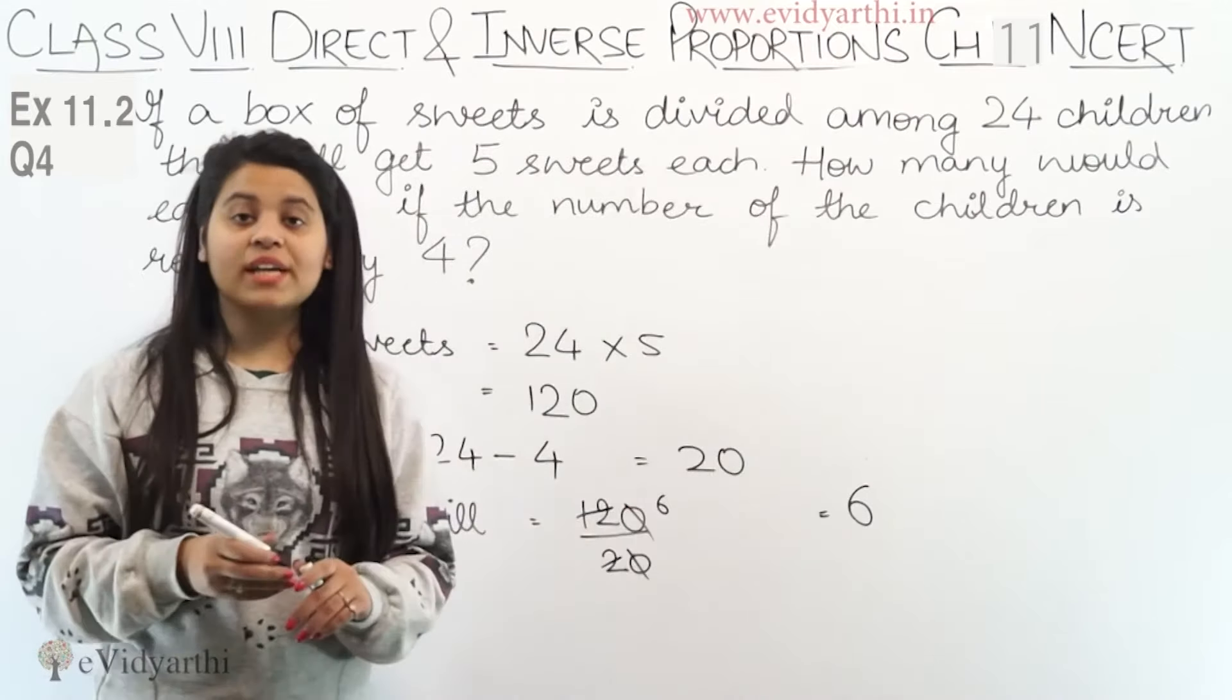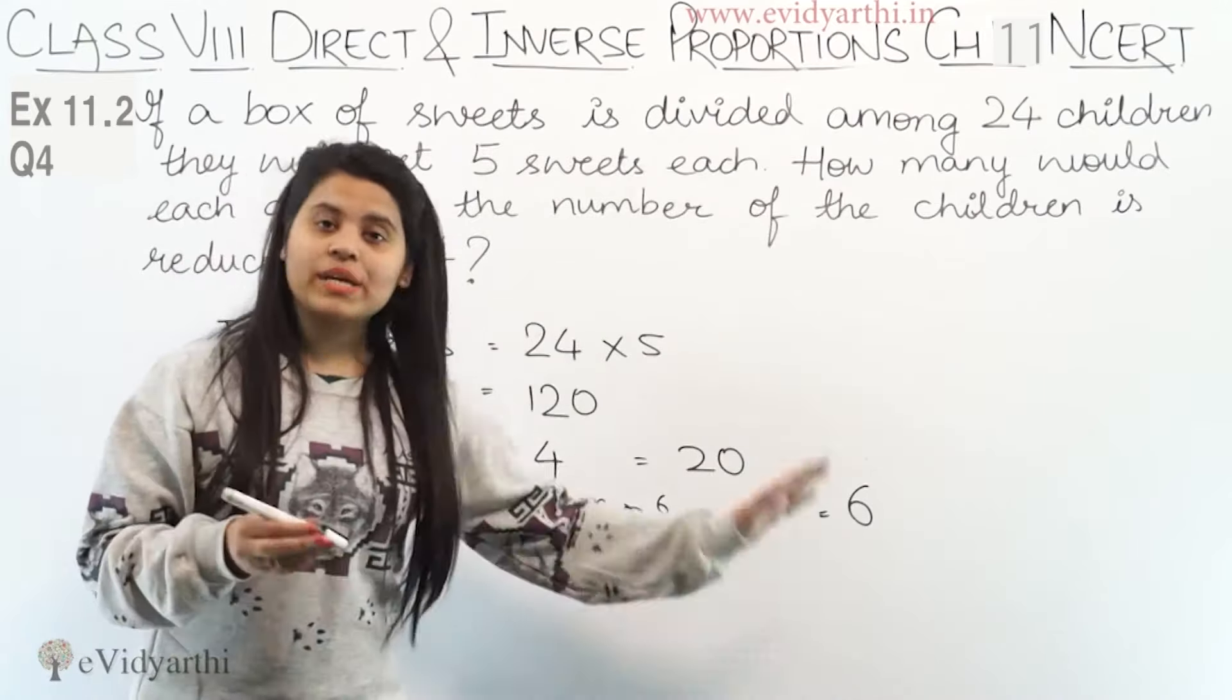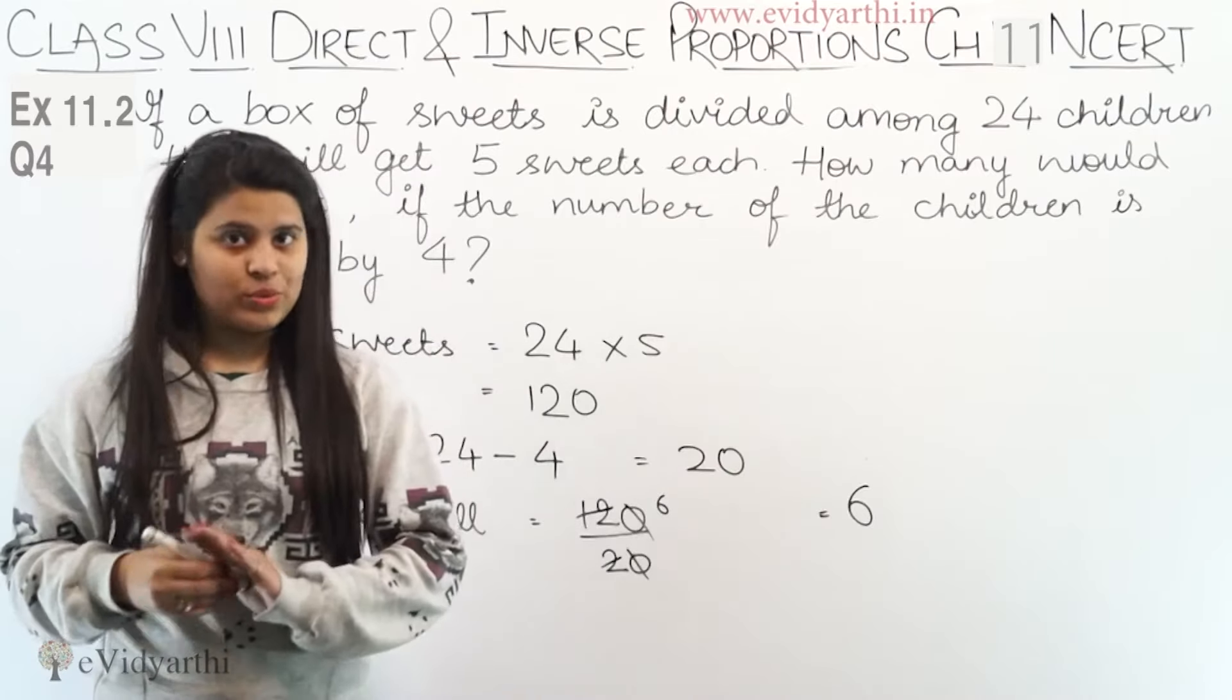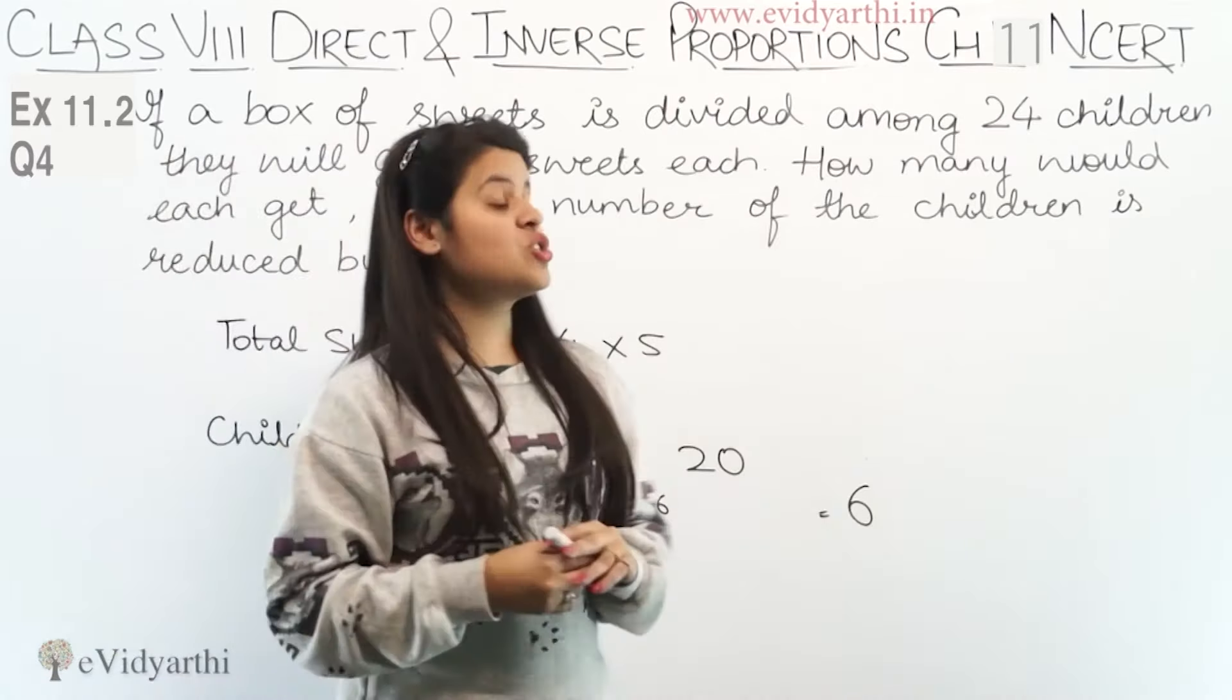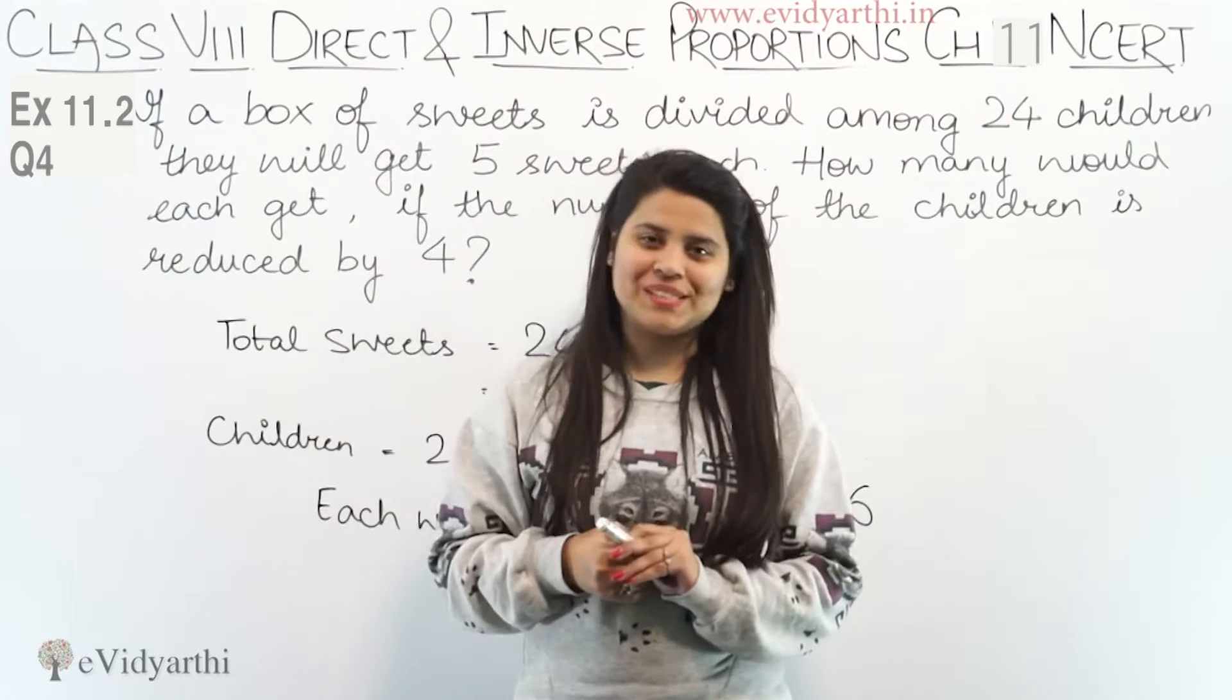If you reduce 4 children, then 20 children will get 6 sweets each. This was question number 4. Now let's come to the next question.